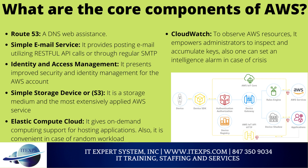What are the core components of AWS? Route 53 — a DNS web service. Simple Email Service — it provides sending email utilizing RESTful API calls or through regular SMTP. Simple Storage Service (S3) — a storage medium and the most extensively used AWS service. Elastic Compute Cloud — it gives on-demand computing support for hosting applications and is convenient for random workloads. CloudWatch — to observe AWS resources, it empowers administrators to inspect and accumulate key metrics, and one can set an alert alarm in case of a crisis.